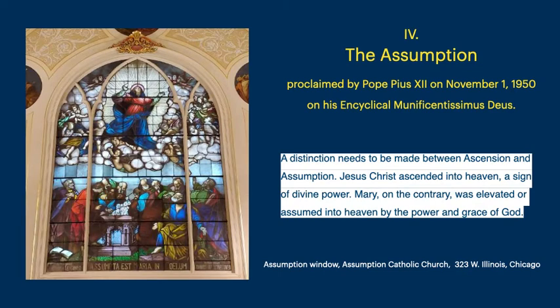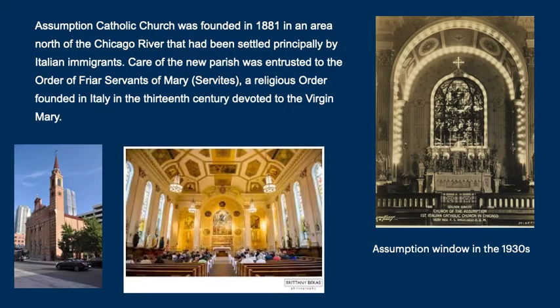Finally, we come to the Assumption. This dogma was not proclaimed until November 1, 1950. First, an explanation: there is a distinction between an ascension and an assumption. Jesus Christ ascended into heaven — a sign of divine power. Mary, on the contrary, was elevated or assumed into heaven by the power and grace of God. What we're seeing here is the Assumption window at Assumption Catholic Church in Chicago. The church was founded in 1881 in an area north of the Chicago River that had been settled by Italian immigrants. The care of this new parish was entrusted to the Order of Friar Servants of Mary, or Servites, a religious order founded in Italy in the 13th century devoted to the Virgin Mary.